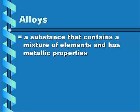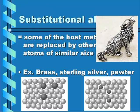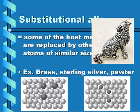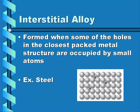An alloy is a substance that contains a mixture of elements and has metallic properties. There are two types: substitutional and interstitial. In substitutional alloys, some host metal atoms are replaced by other metal atoms of similar size — examples include brass (copper with zinc atoms), sterling silver, and pewter. Interstitial alloys are formed when some of the holes in the closest-packed metal structure are occupied by smaller atoms, such as steel, where iron atoms have holes filled with carbon.